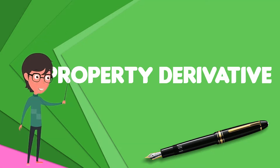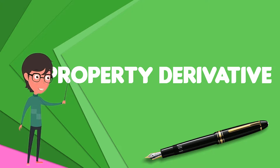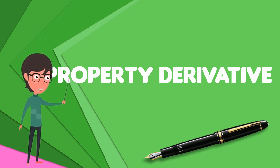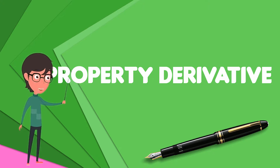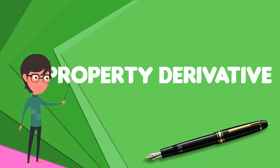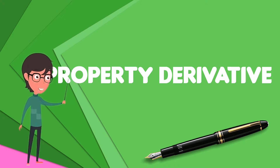A property derivative is a financial derivative whose value is derived from the value of an underlying real estate asset. In practice, because individual real estate assets fall victim to market inefficiencies and are hard to accurately price, property derivative contracts are typically written based on a real estate property index. In turn, the real estate property index attempts to aggregate real estate market information to provide a more accurate representation of underlying real estate asset performance.